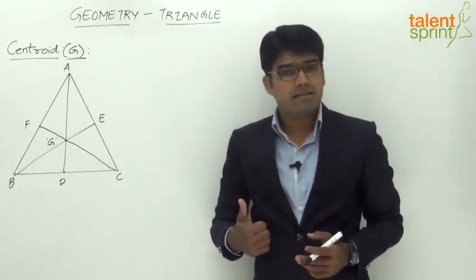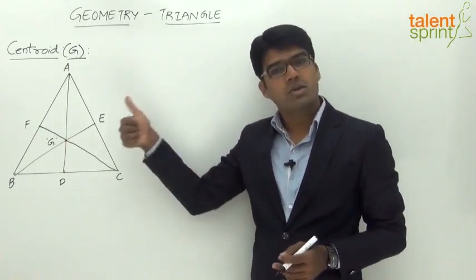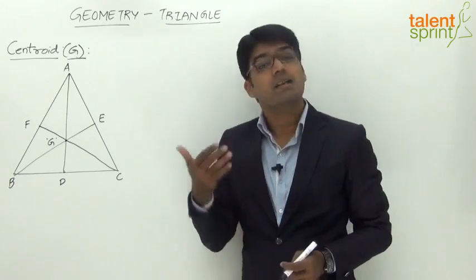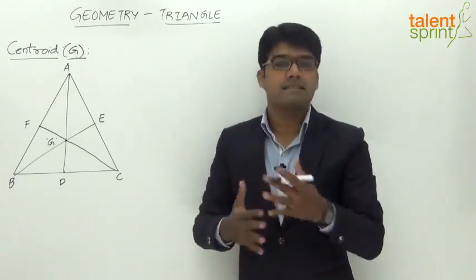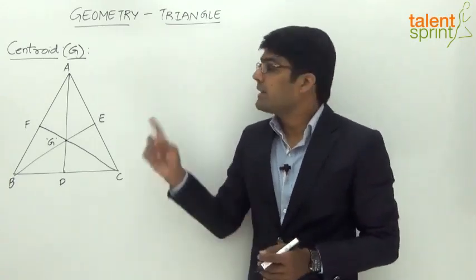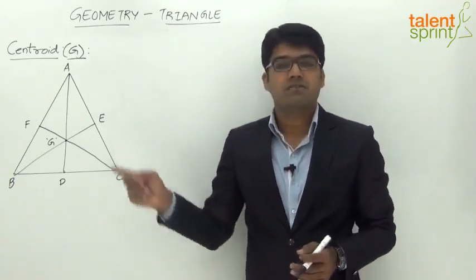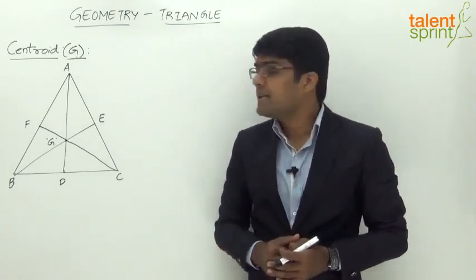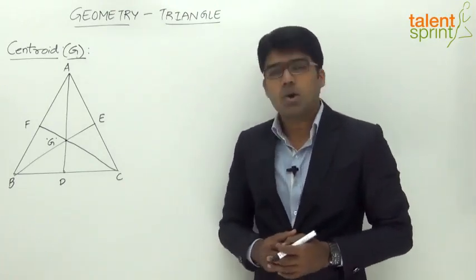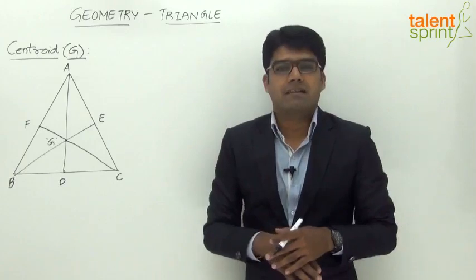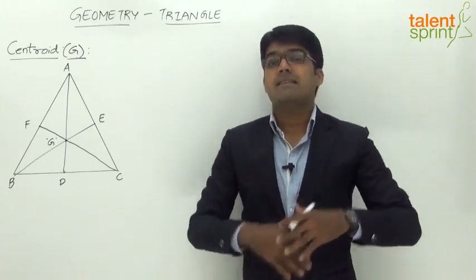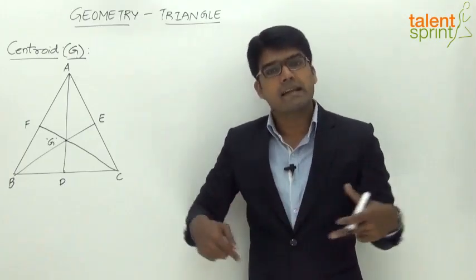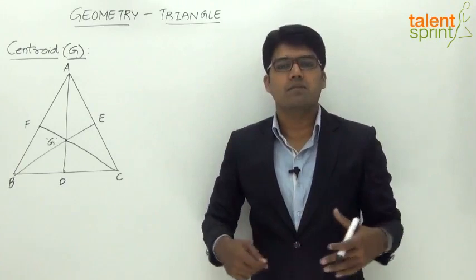So to summarize: a median is a line joining a vertex of a triangle with the midpoint of the opposite side. A median divides the triangle into two equal parts, and the point of intersection of the medians is the centroid. Remember that the centroid is always within the triangle — it never lies outside the triangle. The centroid always falls inside the boundary of the triangle.